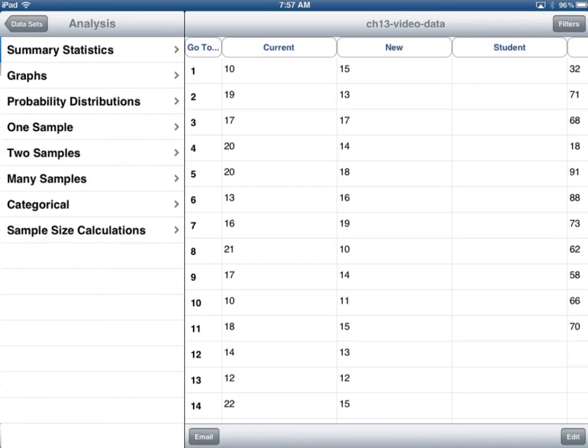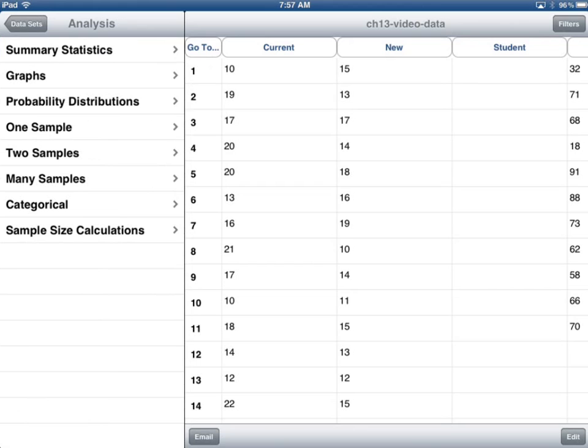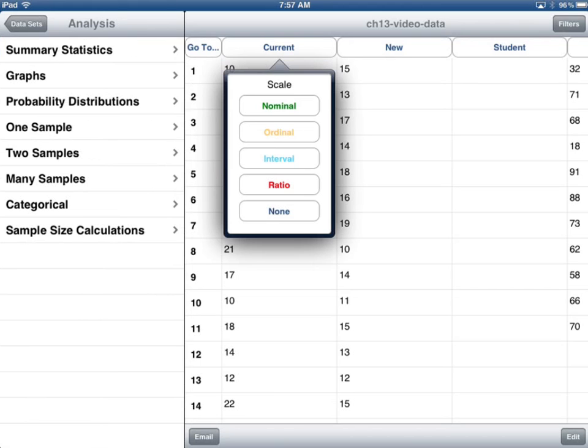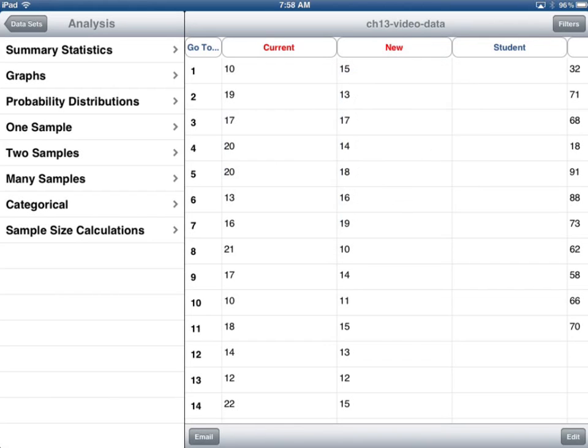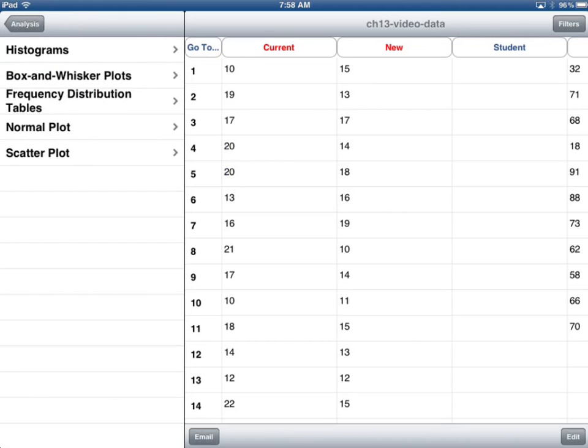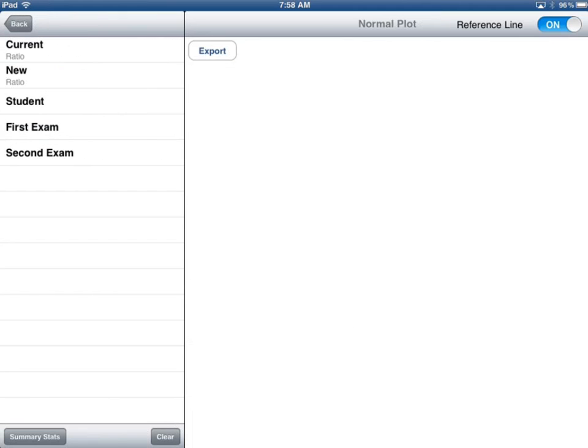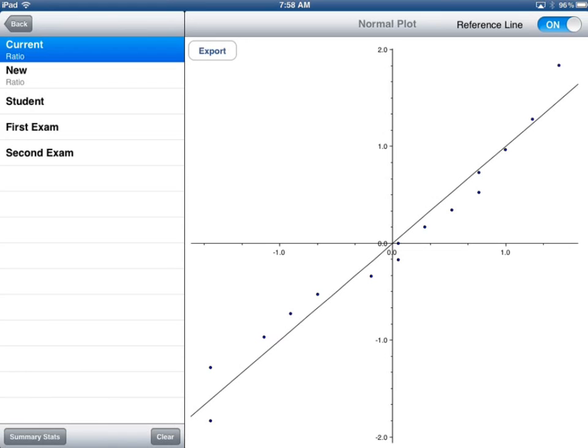So, here we are in TC Stats. Here's the data, the current and the new. I need to set these. This is clearly ratio, the number of blemishes. So, let's look at graphs, do a normal plot on the current, and make a determination. Now, you may say this is not normal because of this and this. And, I may agree. For right now, we're going to say that it is normal and proceed as if it were normal.